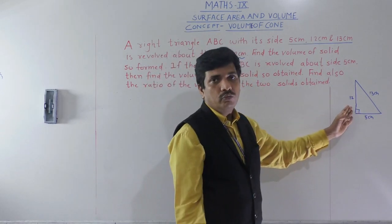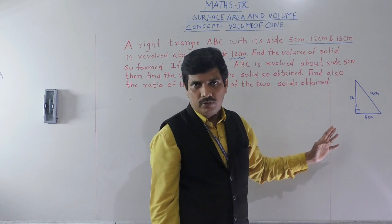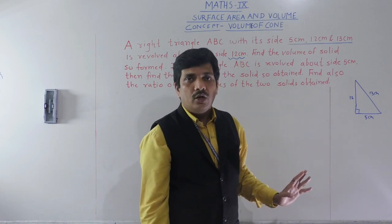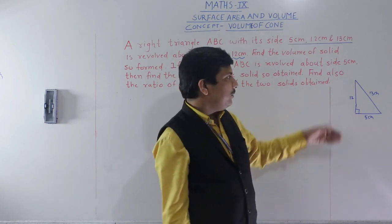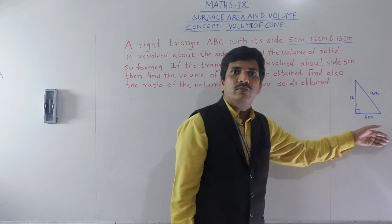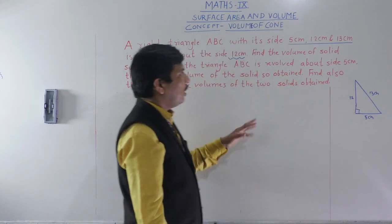When the right-angle triangle is revolved about the side 12 cm, you will get a right circular cone whose height will be 12 cm and radius will be 5 cm. This is the first case.